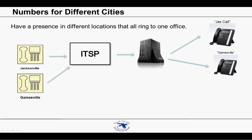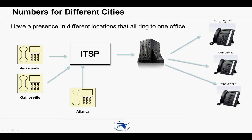We can also assign numbers from different states. You could have a number in Atlanta that is sent to you just like your in-state and local calls are. You can also have a number from a different country. Perhaps your company does business in the Caribbean — someone in the Bahamas could call your company from a local Nassau number and that call would be routed accordingly.